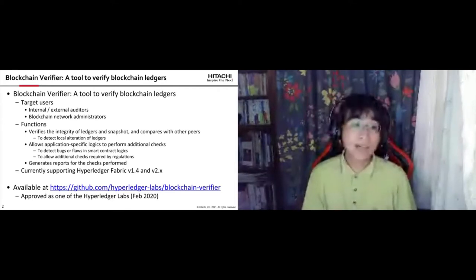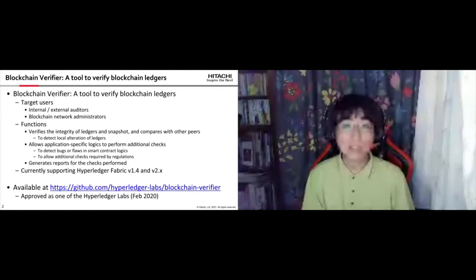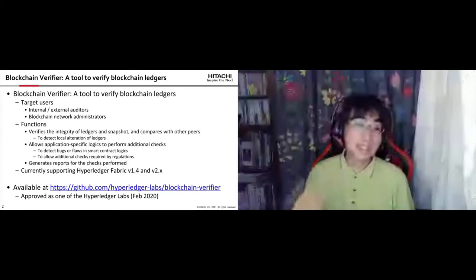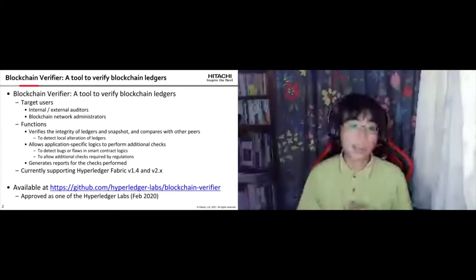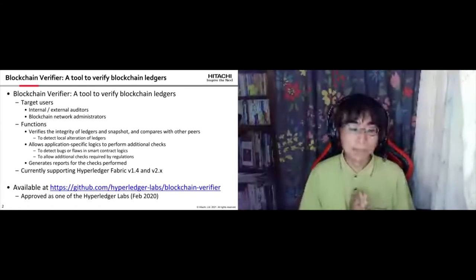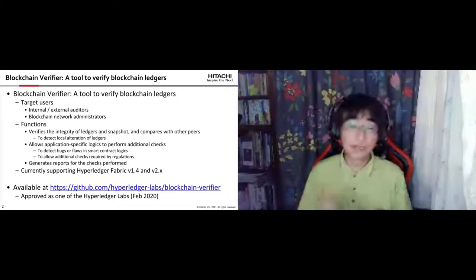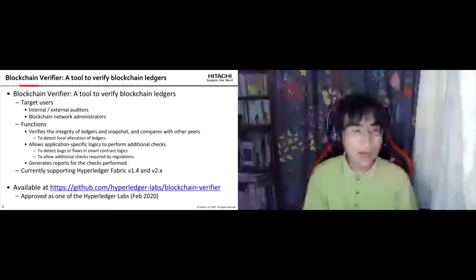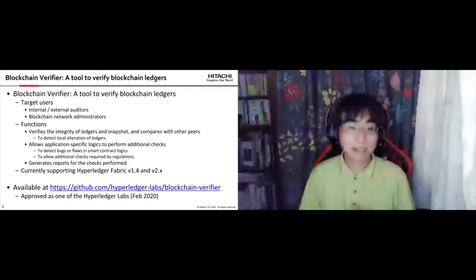The second function is to allow application-specific logic to perform additional checks — to detect bugs or flaws in smart contract logic, and to allow additional checks required by regulations, such as anti-money laundering checks required in banking transfer systems. The third function is to generate reports for the checks performed.